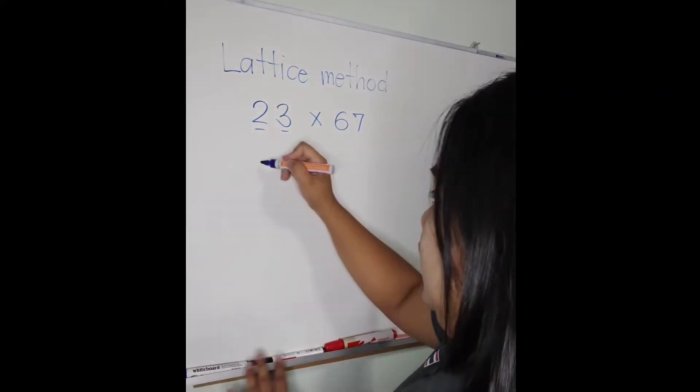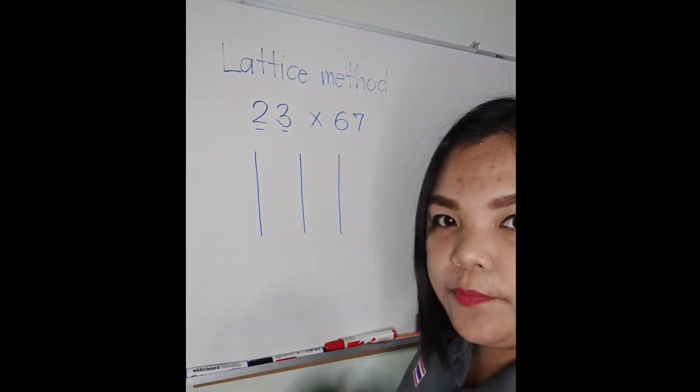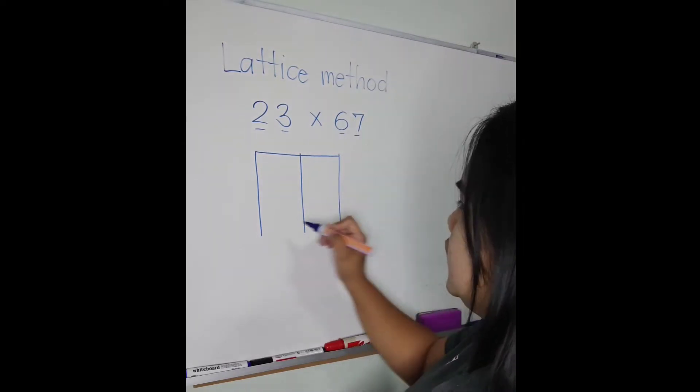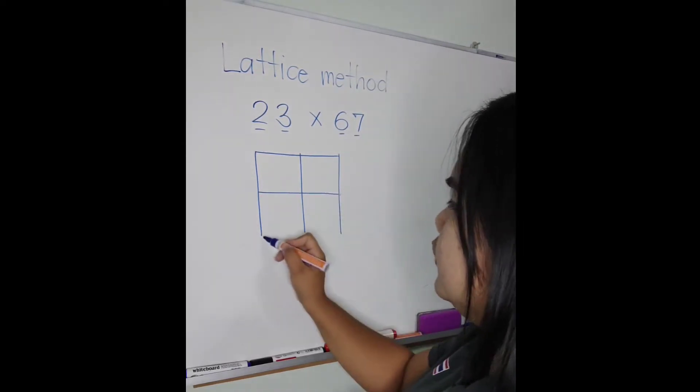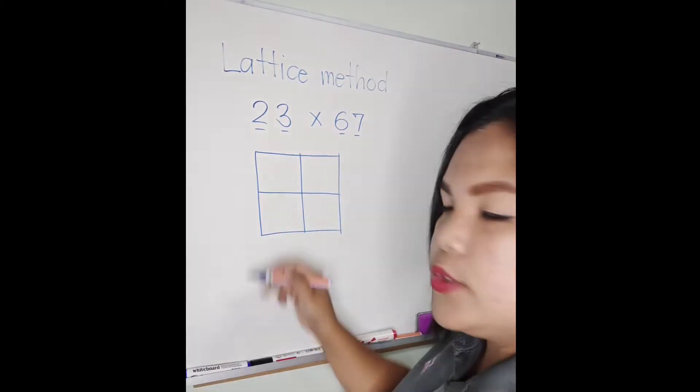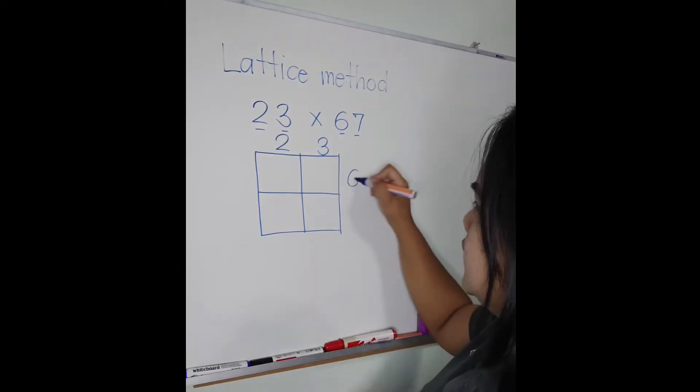So we are going to make a box. We have two columns, and then we have two digits here, so we are going to make two rows. So we'll make two columns and two rows. This one is for 23 times 67.